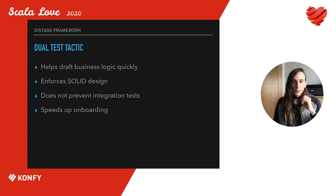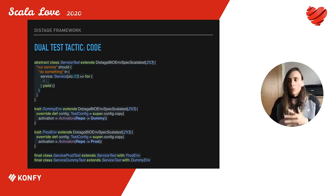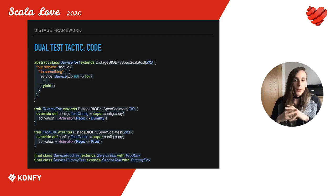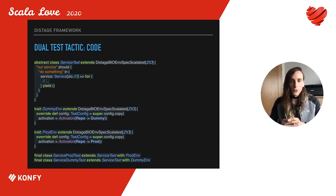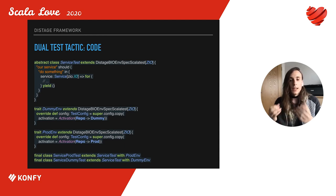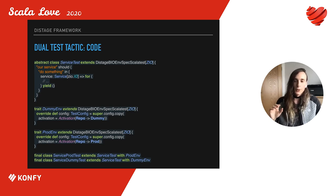Let's see how D.Stage helps us implement the dual test tactic. First we write an abstract test suite, then we define several environment traits — each environment overrides the test suite configuration. In this example we're applying DummyEnv for tests with dummy repositories and ProdEnv for tests with production repositories. Then we extend our abstract test suite with our environments, and that's it. It's very easy to switch implementations — we just declare the preferred choices along the repo axis instead of micromanaging individual components.